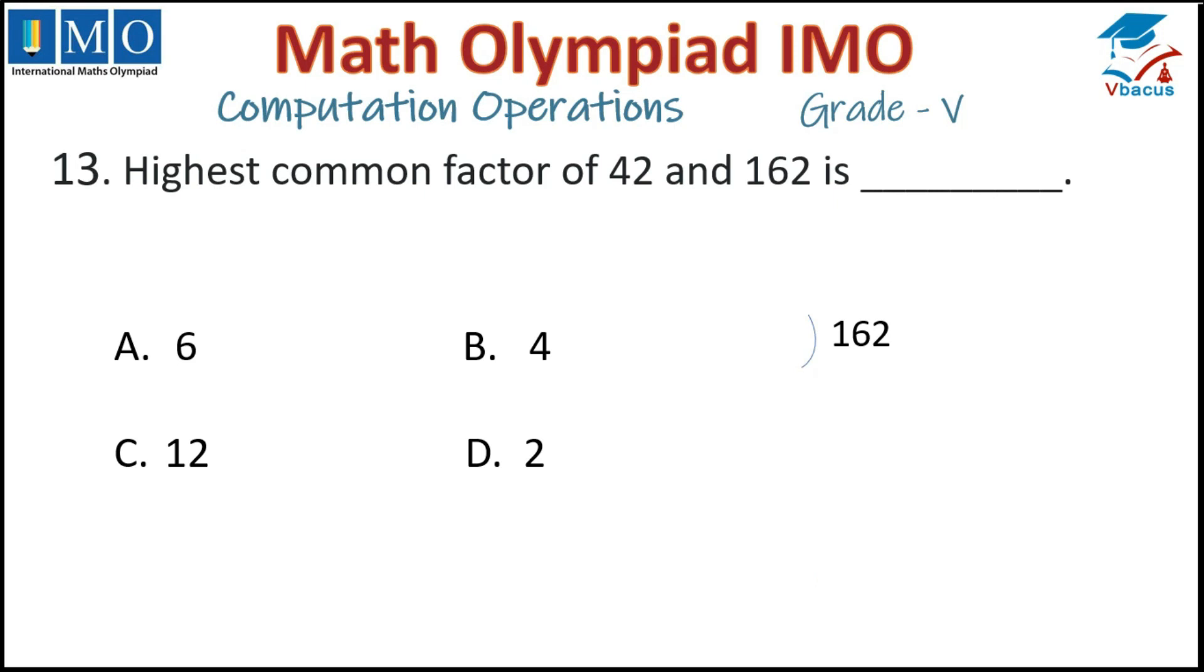So 162 should be divided by 42. It will go 3 times, so 126. What is remainder? 36. Now we will take 36 as divisor and 42 as dividend. How many times will it go? It will go one time, remainder is 6.